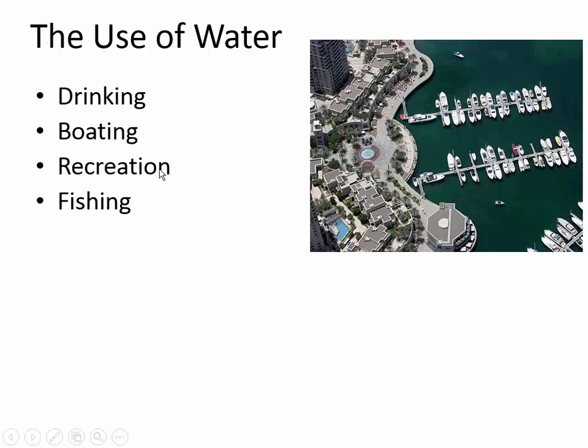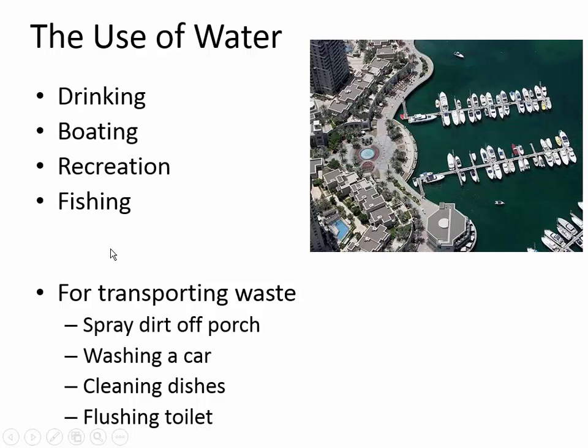A highly protected reservoir that doesn't allow boating is trying to avoid gasoline contamination. In Utah, they have canyons where drinking water comes from — they don't allow dogs up in the canyons, and people aren't allowed to swim in the lakes because those are supposed to be kept very clean and pure for the drinking water in the town below the mountains. Sometimes we use water to move waste around.